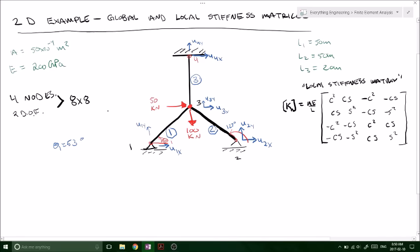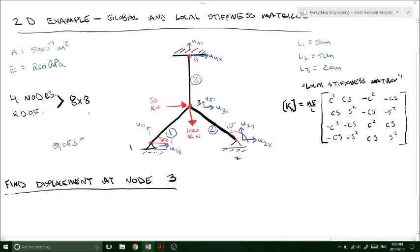In this problem, we need to find the displacement at node three. In order to do that, you don't actually need to construct the entire eight by eight matrix. You can take a shortcut and jump straight to the global stiffness matrix just for the third node. Constructing the whole eight by eight matrix isn't necessary unless the question specifically asks for it. So we're not going to do the whole thing — we're looking at the local stiffness matrix in its general form, and we need to do this three times for our three different members.